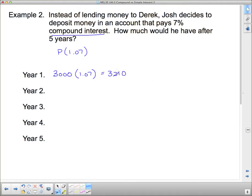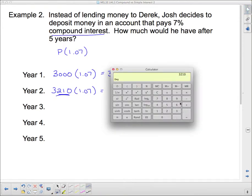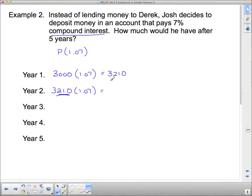So now the bank wants Josh to keep his money there. So they say, okay, on top of that 3,210, we're going to give you 7%. So we're going to reinvest this 3,210 for another year. And you're going to get 107% of that. So 320 times 1.07. Now our new amount is 34.34.70.